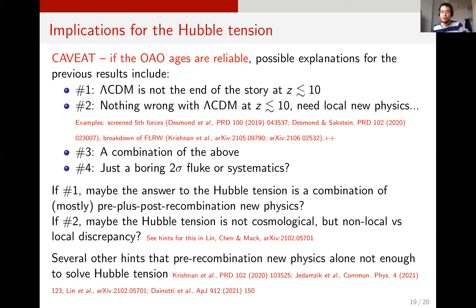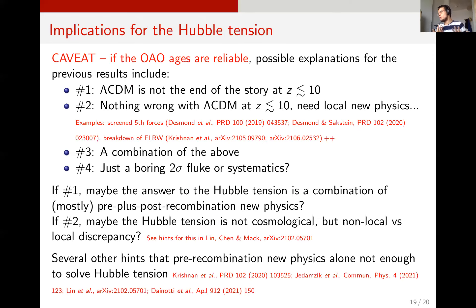If we believe the first option — late-time new physics — it could be that the answer to the Hubble tension is a combination of early time new physics mostly and a bit of late time new physics. This could also be the reason why with early time new physics alone it seems hard to get above H0 of 70 or 71 without running into problems with other data. The missing piece to get from 71 to 73 might come from late time new physics.